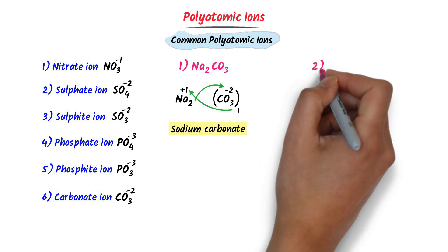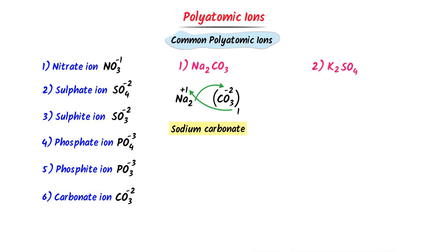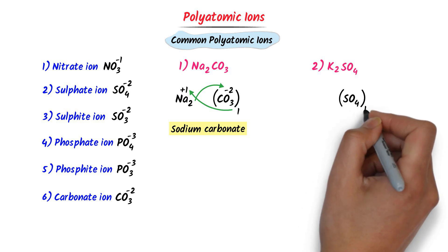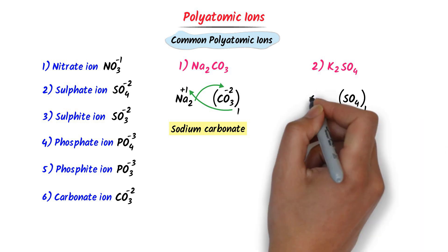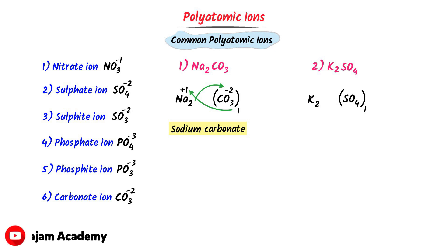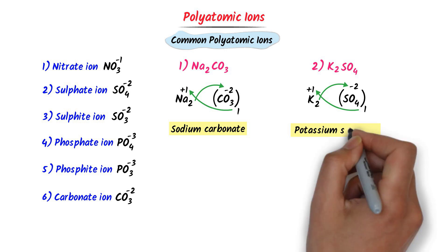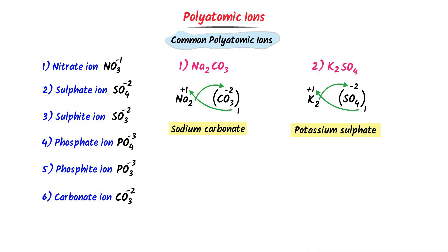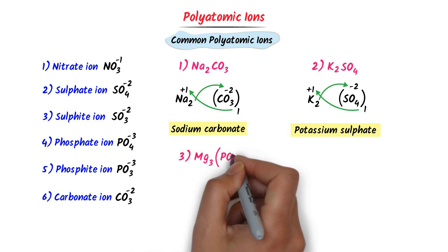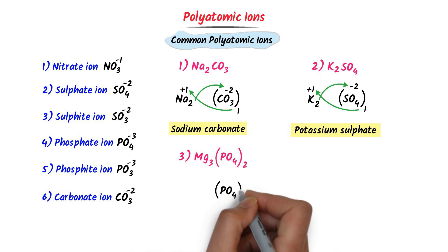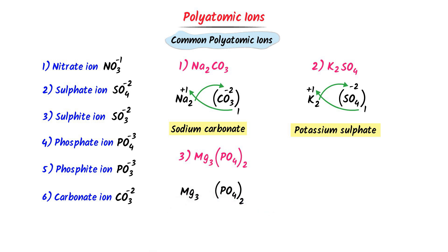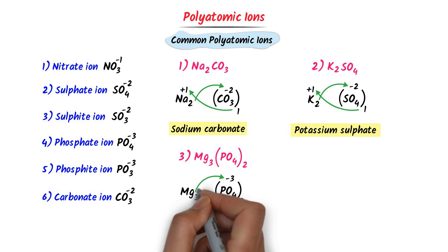For potassium sulfate (K₂SO₄): the polyatomic ion is SO₄, or sulfate ion. According to the criss-cross method, the subscript 2 belongs to sulfate and 1 belongs to potassium. K stands for potassium and SO₄ stands for sulfate — giving potassium sulfate. For magnesium phosphate (Mg₃(PO₄)₂): the polyatomic ion is PO₄. According to the criss-cross method, the subscript 3 belongs to PO₄ and 2 belongs to magnesium — giving magnesium phosphate.